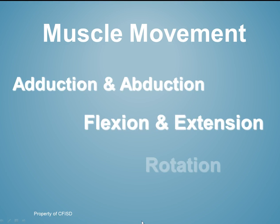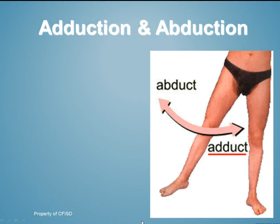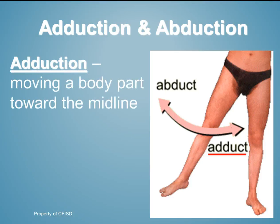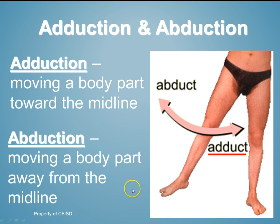We have different types of muscle movements. First, adduction and abduction. Adduction is moving body parts towards the midline — think of ADD, adding it to the midline. Abduction is the opposite: if something is being abducted, it's being taken away, so you are moving a body part away from the midline.